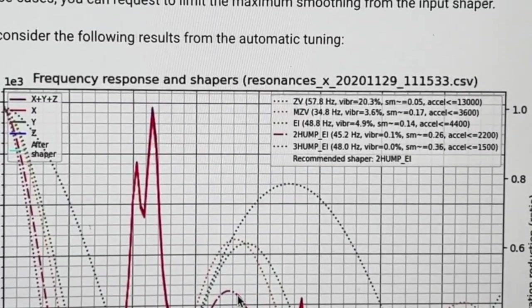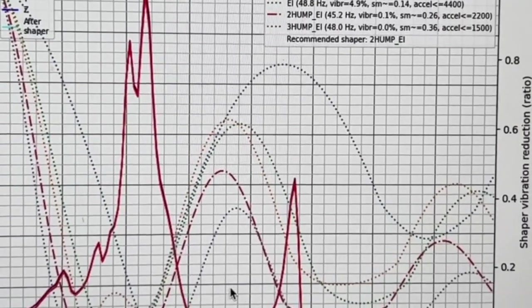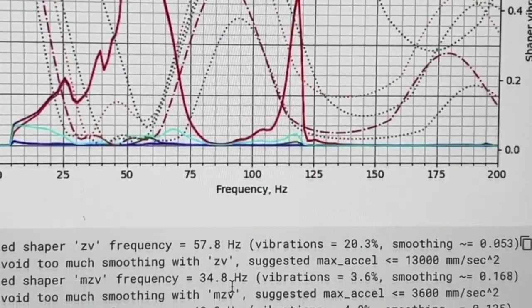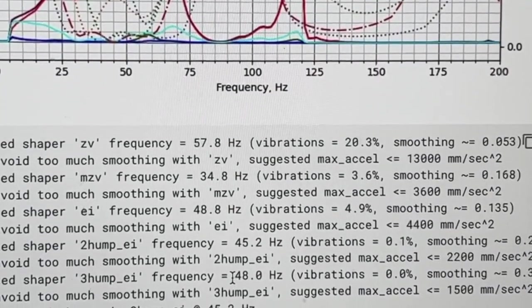It talks about some of the trade-offs so it's worth a read if you really want to dig into it but I've been pretty lucky just going with the default values that the shaper returns and it seems like it's good enough for my purposes.